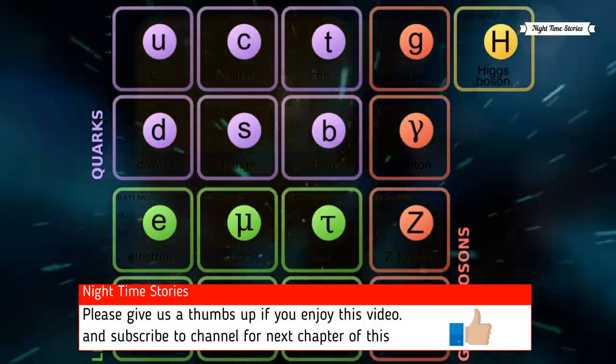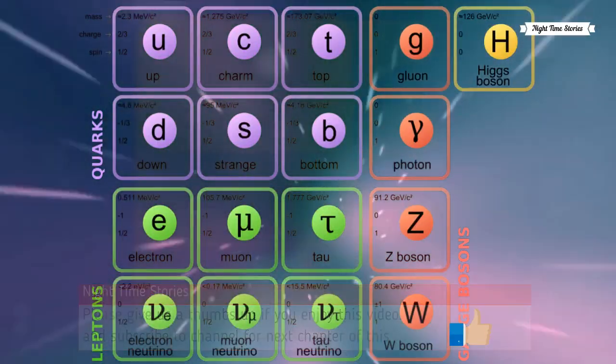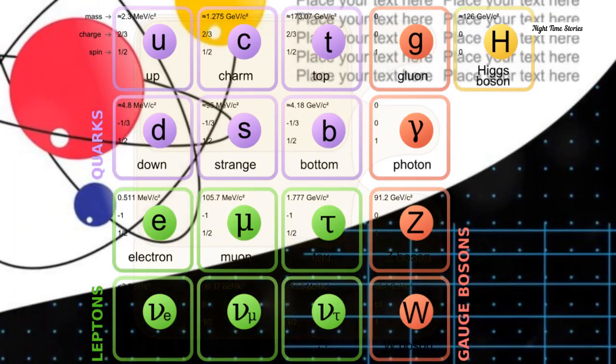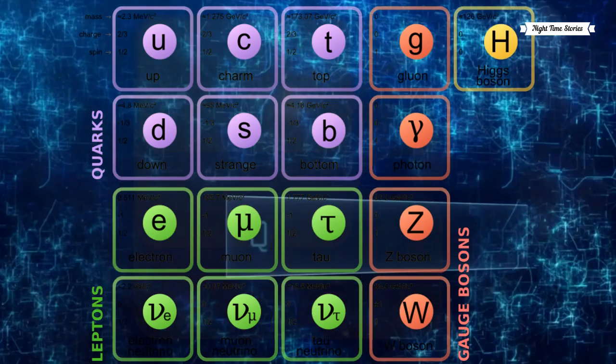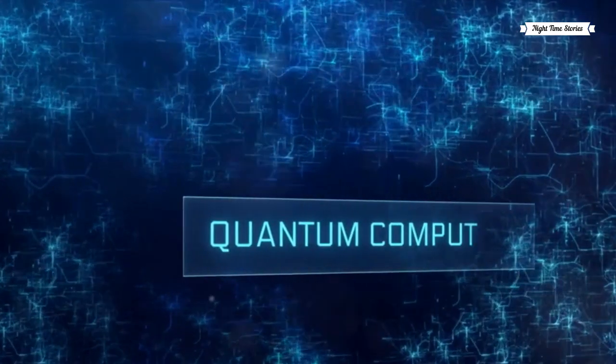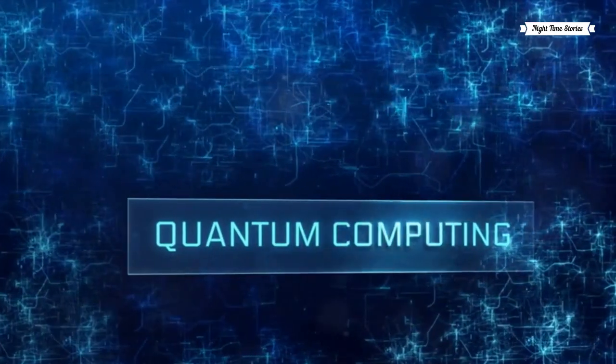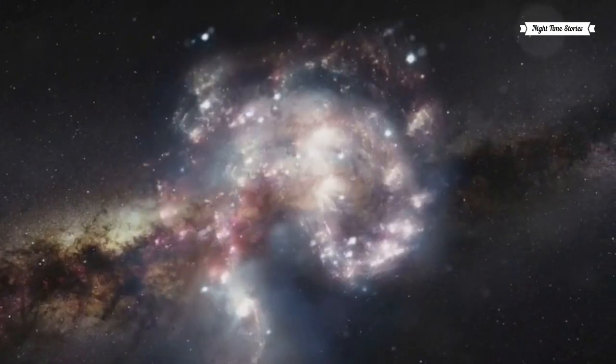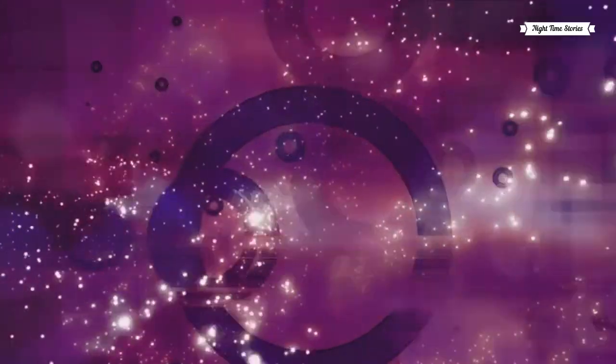The third and fourth quarks, called charm and strange, are heavier than the up and down quarks. They were discovered in the 1960s and 70s during high energy experiments. Though they don't form part of our everyday matter, they are incredibly important for understanding the fundamental laws of physics.